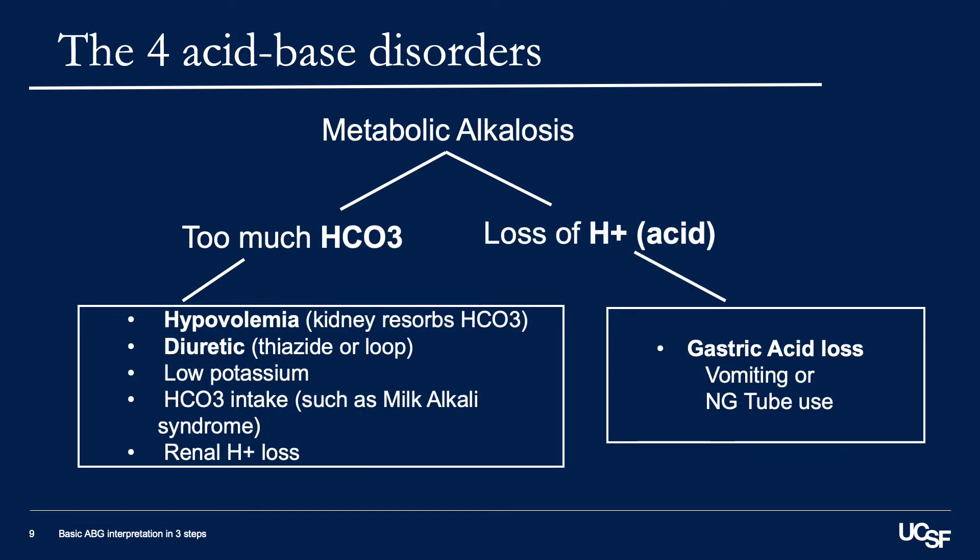Metabolic alkalosis can also be thought of in two major buckets: either too much bicarbonate or loss of an acid. The latter typically occurs in the hospital medicine setting through gastric acid loss, either through vomiting or nasogastric suction, whereas too much bicarbonate more commonly occurs because of kidney resorption of bicarbonate, either in response to hypovolemia or diuretics.